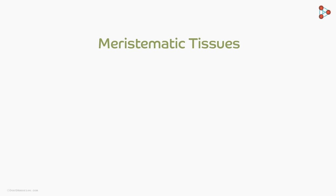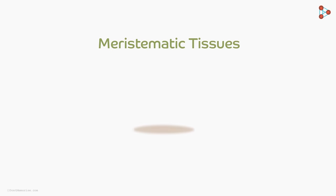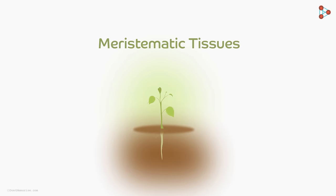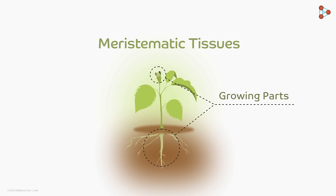Where does the word meristematic come from? It comes from the Greek word meristos, meaning divided. The main function of this tissue is to divide and help the plant grow. They are found at all the places where the plant's parts show growth.